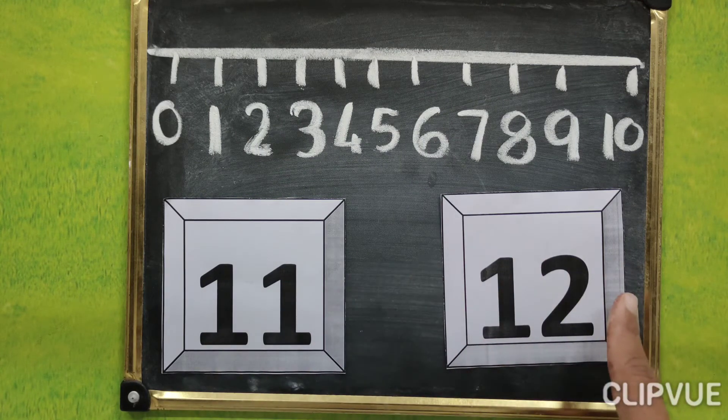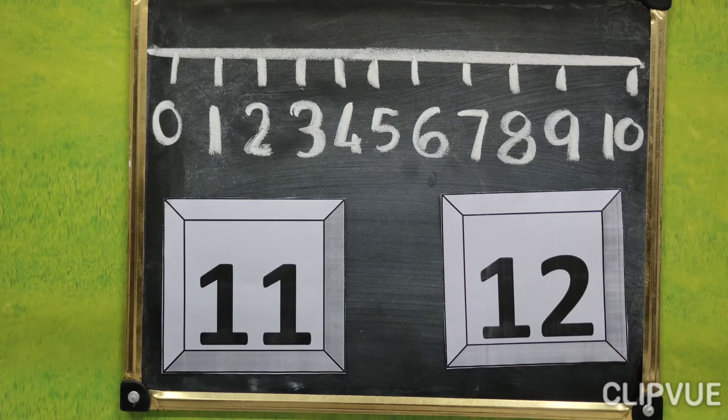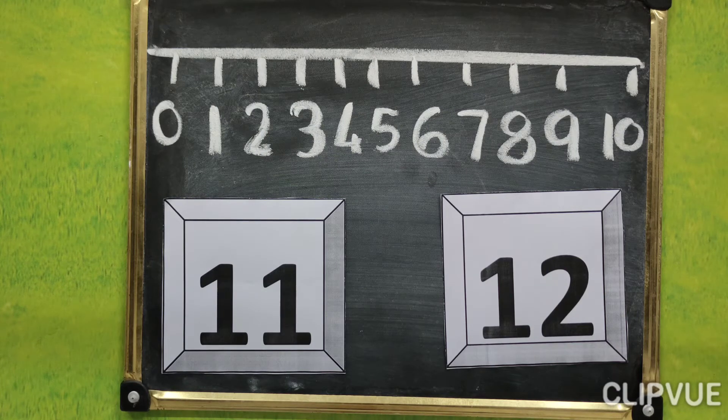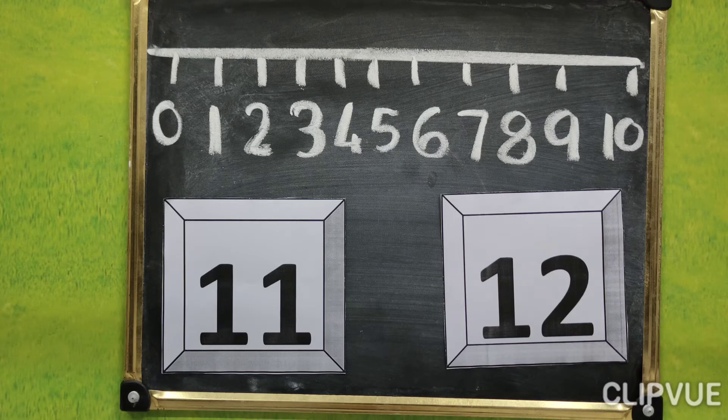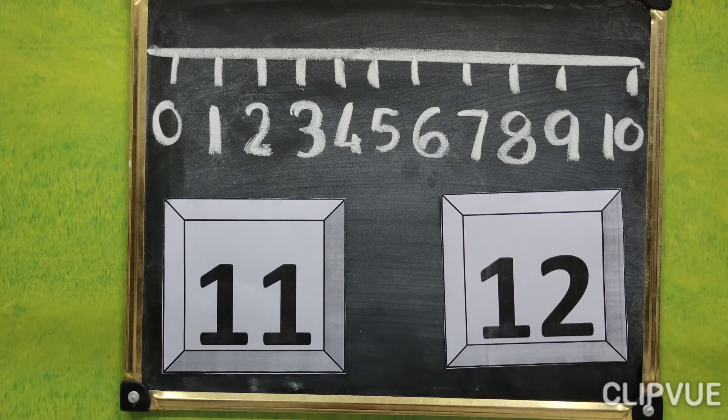And here you know how to find out big number in single digit. You know very well. But this is a double digit. How to find out? Listen carefully.